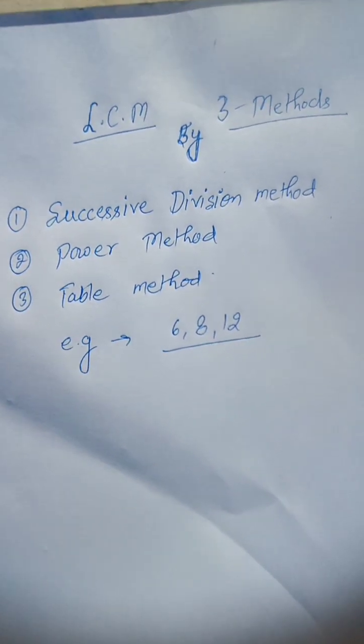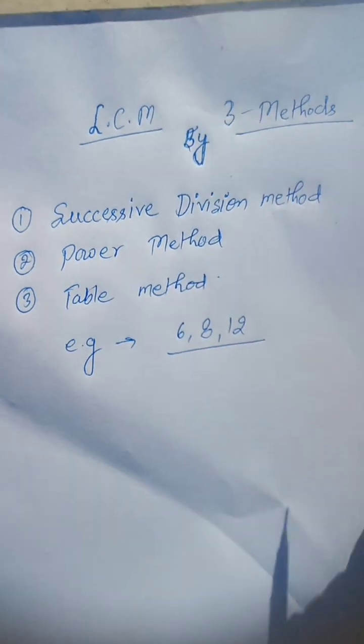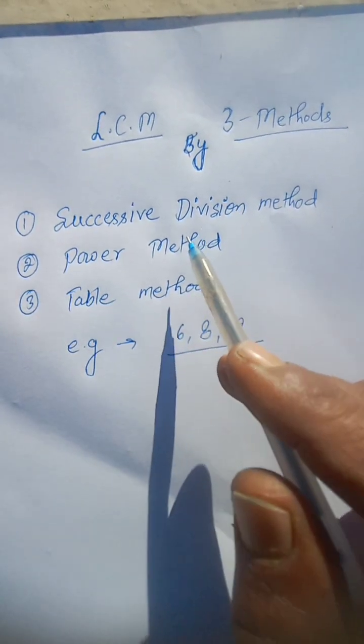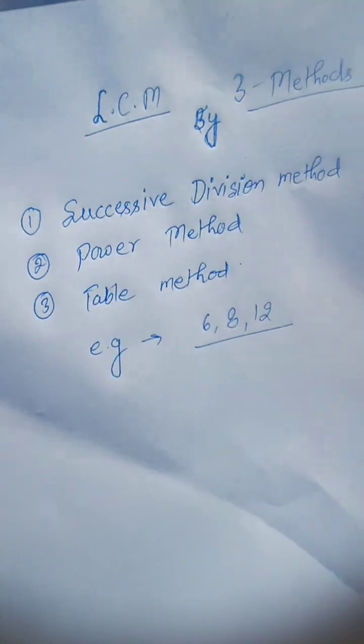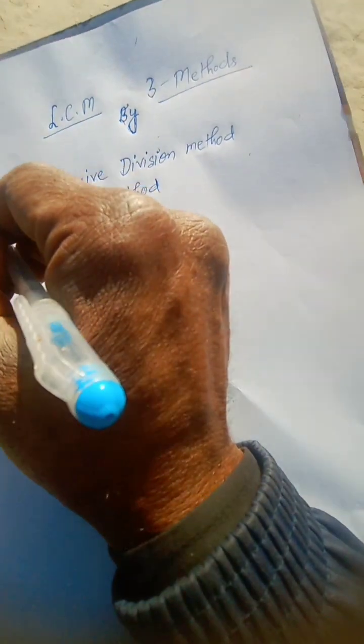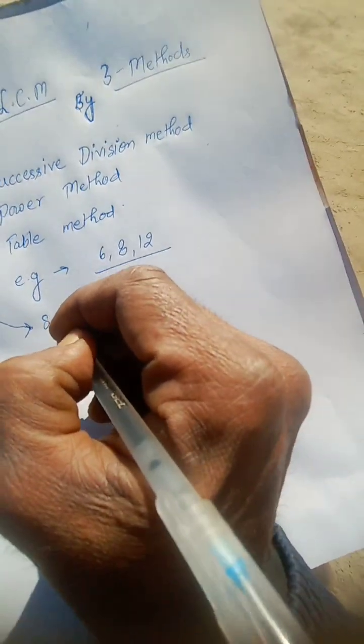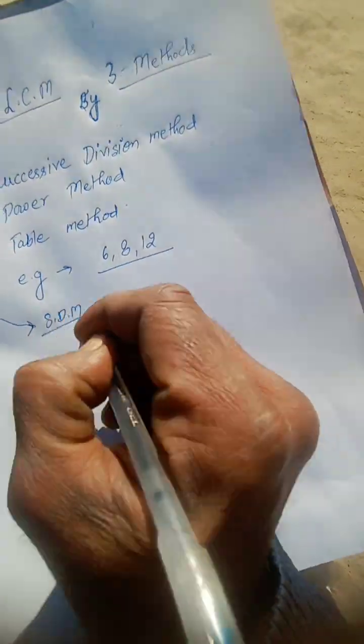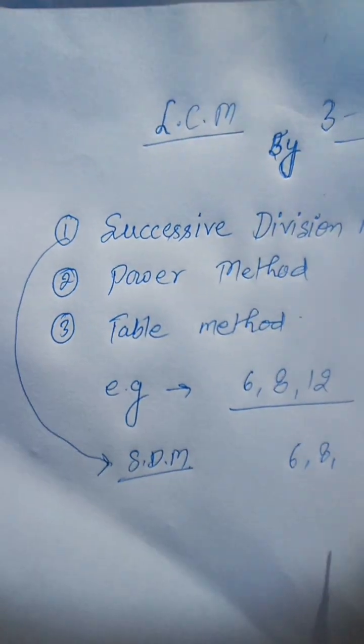We have three methods for evaluating. First is successive division method, second is power method, and third is table method. One by one I am discussing each one. First of all, successive division method, SDM.